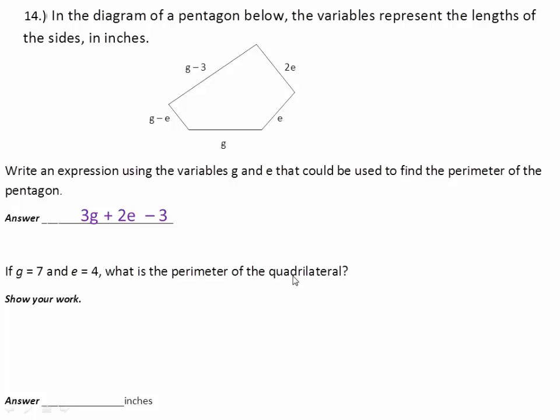First of all, I got a typo here. This is not a quadrilateral. A quadrilateral would have four sides. So why don't you cross yours out and put a pentagon like we already said. I apologize for that. We know what g is. We know what e is. So we need to put these numbers in for these variables.